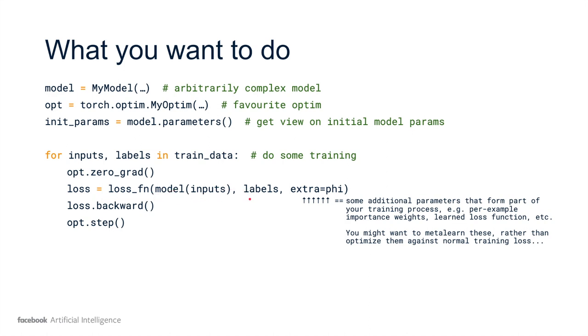We feed the inputs through the model to make predictions, then feed those predictions to a loss function along with the labels. We'll assume some extra meta variable phi, which the loss is a function of. This could be the learning rate, or importance weights, or whatever you want. After computing the loss, we call loss.backward to compute the gradients with regard to our model parameters, and then we take an optimizer step. This is all pretty standard PyTorch.